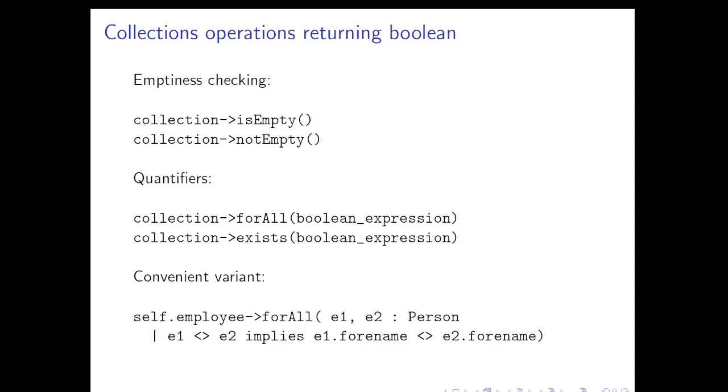Here's a very common example. If we want to say self.employee->forAll(e1, e2: Person | e1 <> e2 implies e1.forename <> e2.forename), in other words, we're saying that in this particular case, forename is going to act as a key on the collection of employees. Notice that this basically implies that whatever the type of the objects of that self.employee collection is, it either is or can be regarded as being a Person, otherwise this wouldn't make sense. It's optional to actually give that type colon Person, but it's often convenient to do so for the reader.